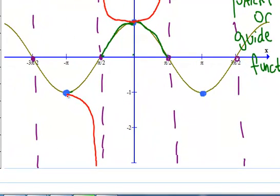So, basically, if you know where they're equal, you can just draw in the secant function.